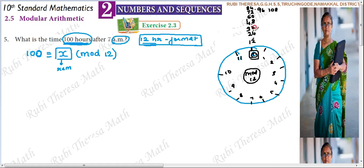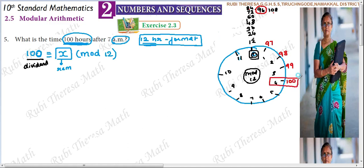Now the dividend here is 100 — that is the number to be divided. We need to find the remainder when 100 is divided by 12. The nearest multiple of 12 below 100 is 96. So from 96 we count: 97, 98, 99, 100 — that is 4 steps. So the remainder when 100 is divided by 12 is 4. We can verify: 12 times 8 is 96, and 100 minus 96 is 4. So x equals 4.